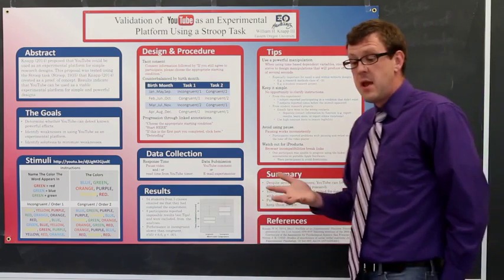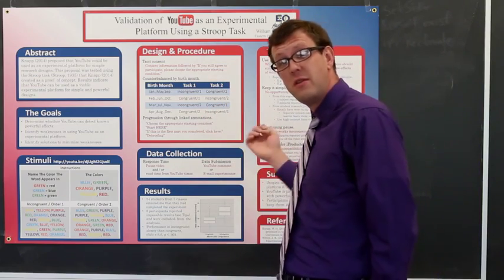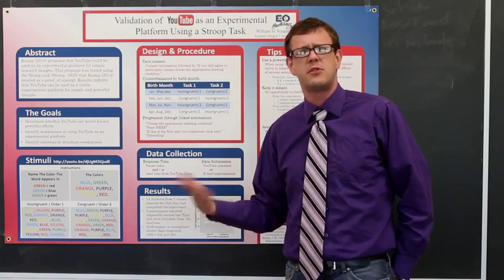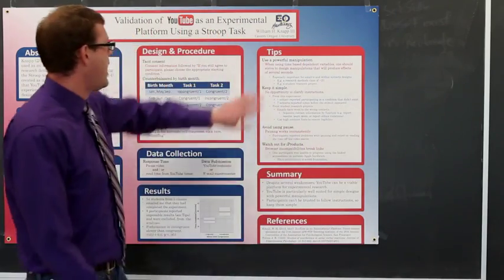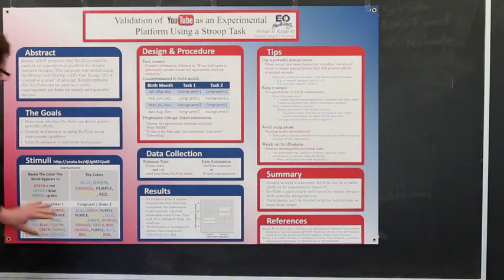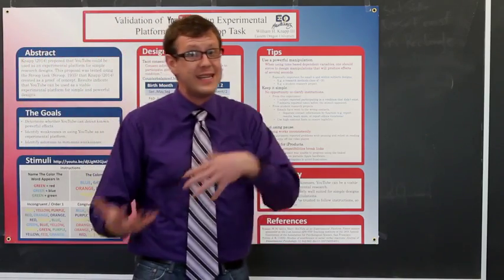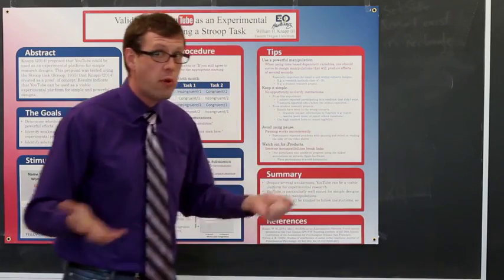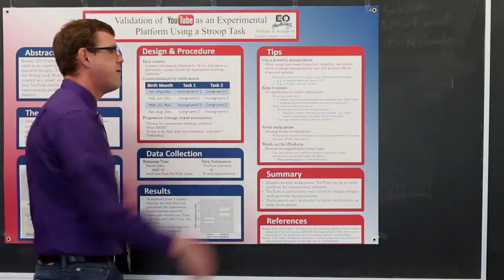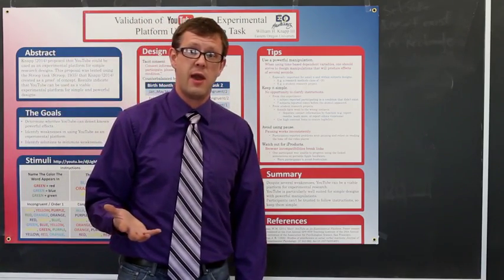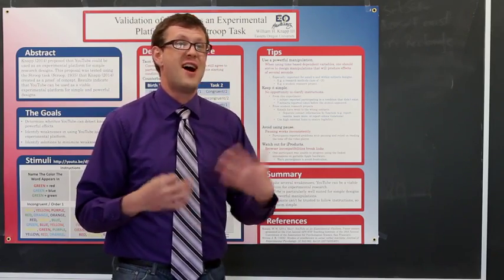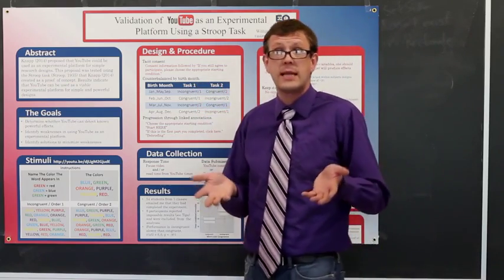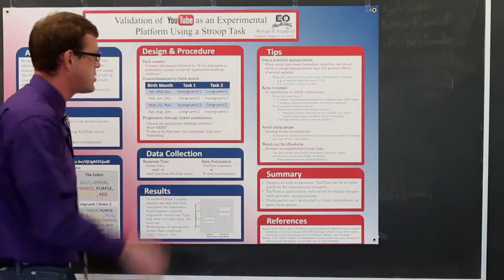So some tips, because not only was this designed to see whether YouTube could detect effects, is also designed to see what some limitations or weaknesses of YouTube would be, and also to try to overcome some of those. So one, I would suggest using a powerful manipulation. If I just gave them one word, the difference between congruent and incongruent is probably going to be on the order of milliseconds, and I wanted something on the order of seconds, because they're reporting seconds in the video. So use something that's powerful. Keep things simple. There's no opportunity that you have to clarify instructions. So if you instruct them to report condition, and you offer conditions one, two, three, and four, you might get something like six. So use something simple that the students are most likely going to be able to do.